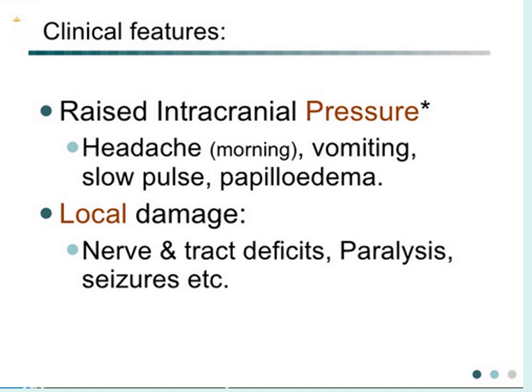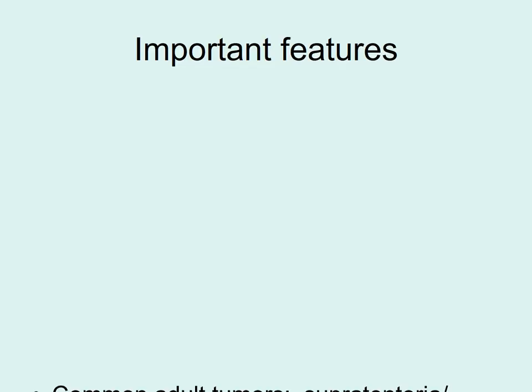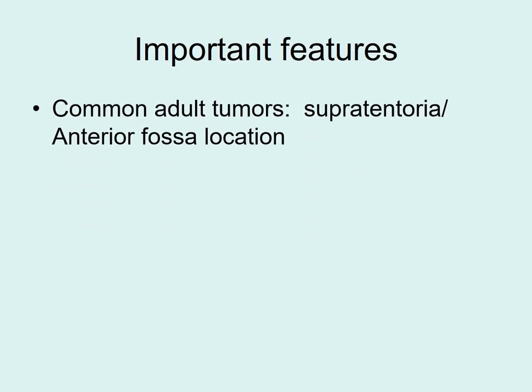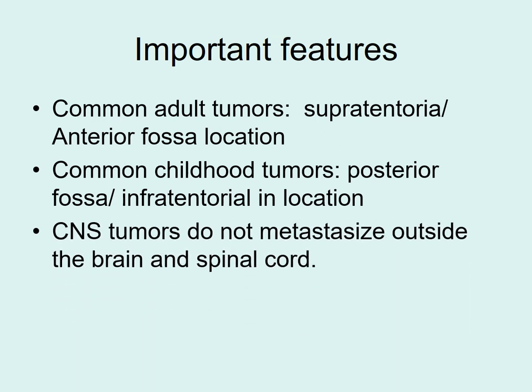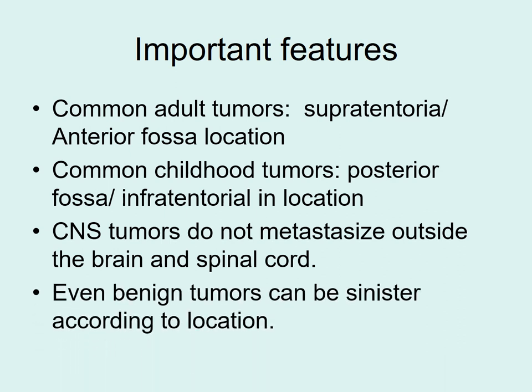Clinically, patients usually present with raised intracranial pressure, presenting with headache, vomiting, slow pulse, and papilledema. There are also symptoms related to local damage: nerve and tract deficits, paralysis, and seizures. Important features: common adult tumors are supratentorial; common childhood tumors are infratentorial. CNS tumors do not metastasize outside the brain and spinal cord, and even benign tumors can be fatal depending on their location.